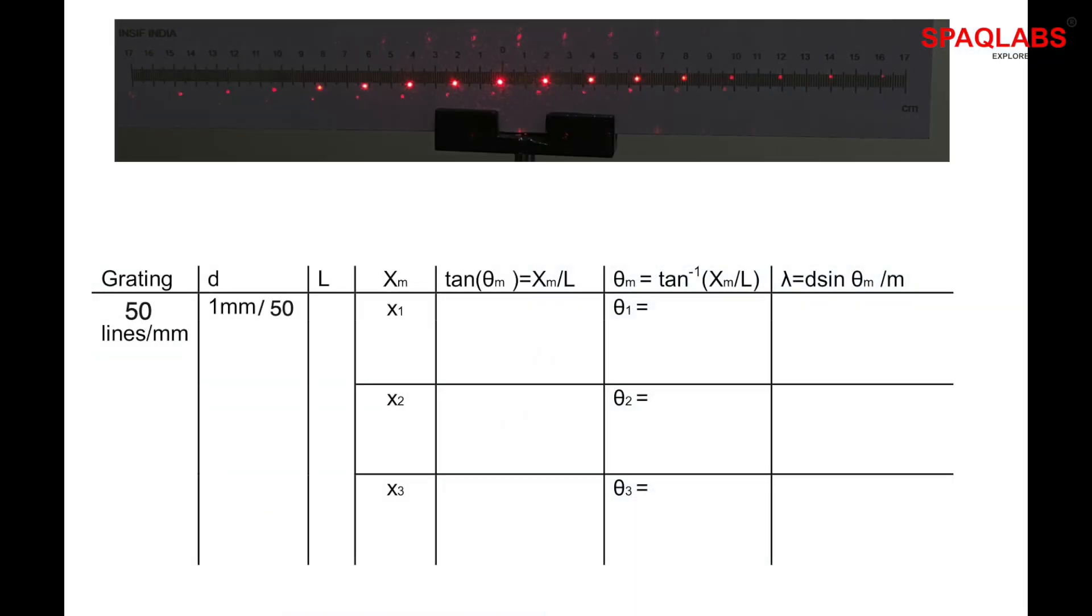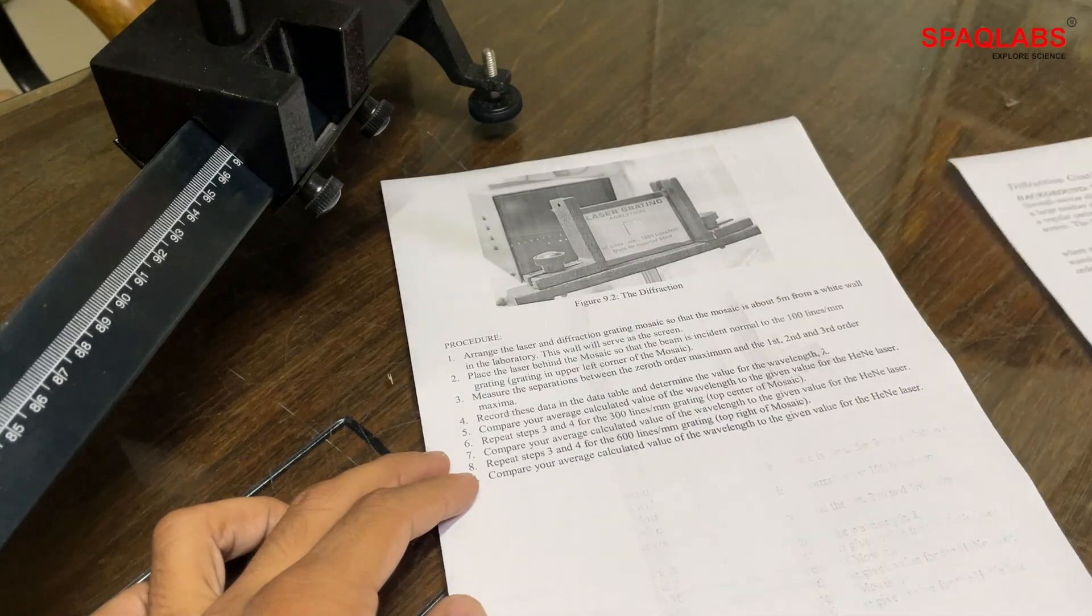Let's have a look at the formula for finding wavelength. Lambda equals D sine theta by M.